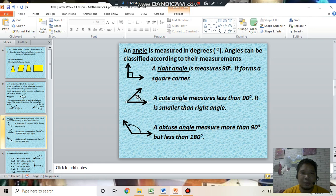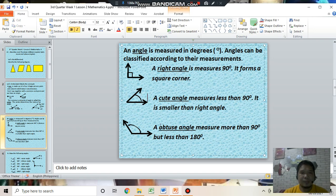This is the illustration of acute angle. It measures smaller than 90 degrees. Next angle is obtuse angle. It measures more than 90 degrees, but less than 180 degrees.